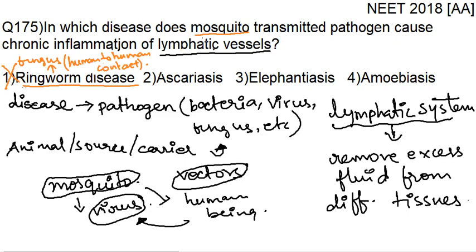Let's discuss the second option: ascariasis. Ascariasis is caused due to a roundworm called Ascaris — that is why the disease is also named ascariasis. This disease spreads due to the intake of contaminated food and water, not due to mosquito bite. So the second option cannot be the answer.